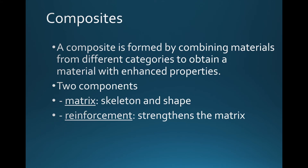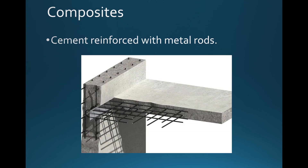Composites are formed by the combination of two materials. Like alloys, we want the best of both worlds — combining materials to make a super material. There are two components: a matrix, which is like the skeleton and shape of the substance, and the reinforcement, which strengthens the matrix. An example is cement reinforced with metal rods. When we build bridges and roads, we don't just pour concrete — we add metal rods to reinforce the cement, making it stronger and more durable.